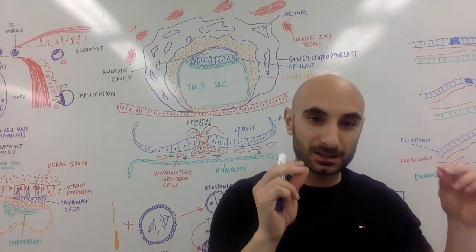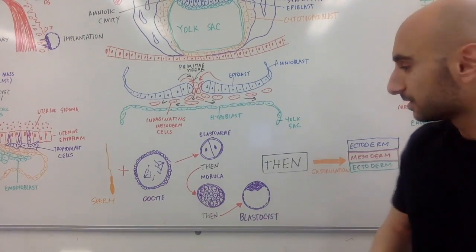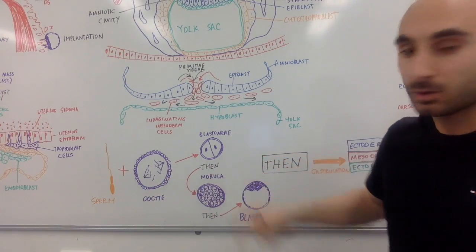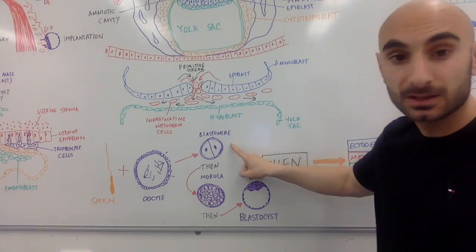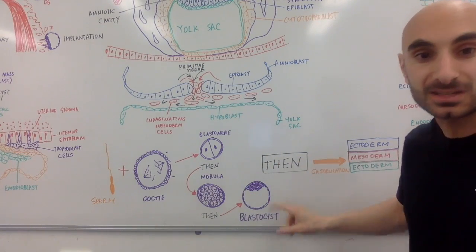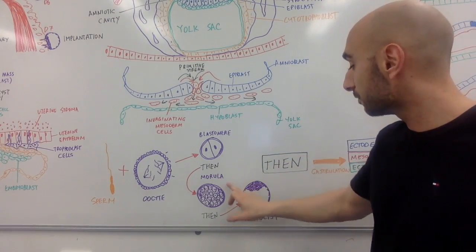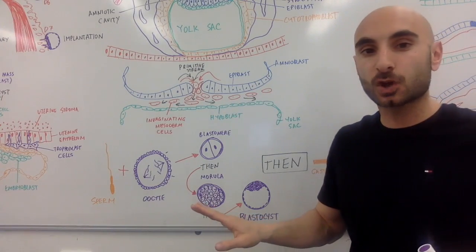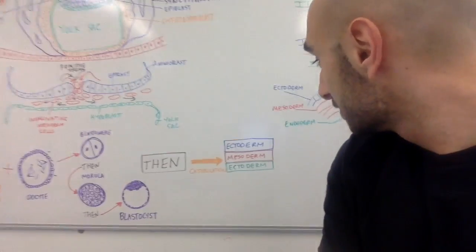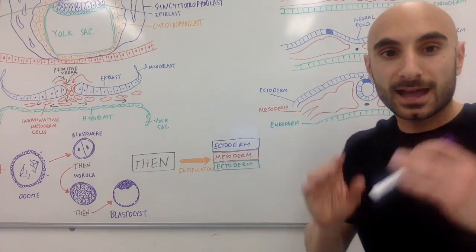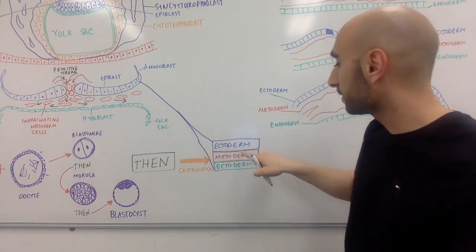Before we go through gastrulation in more detail, let's quickly summarize everything. Sperm plus oocyte — they join and you get a blastomere. Then you have a morula. Then you have a blastocyst. That's it. The blastocyst then turns into three germ layers: the ectoderm, the mesoderm, and the endoderm. All three come from the epiblast. We also have the amniotic cavity and the yolk sac.